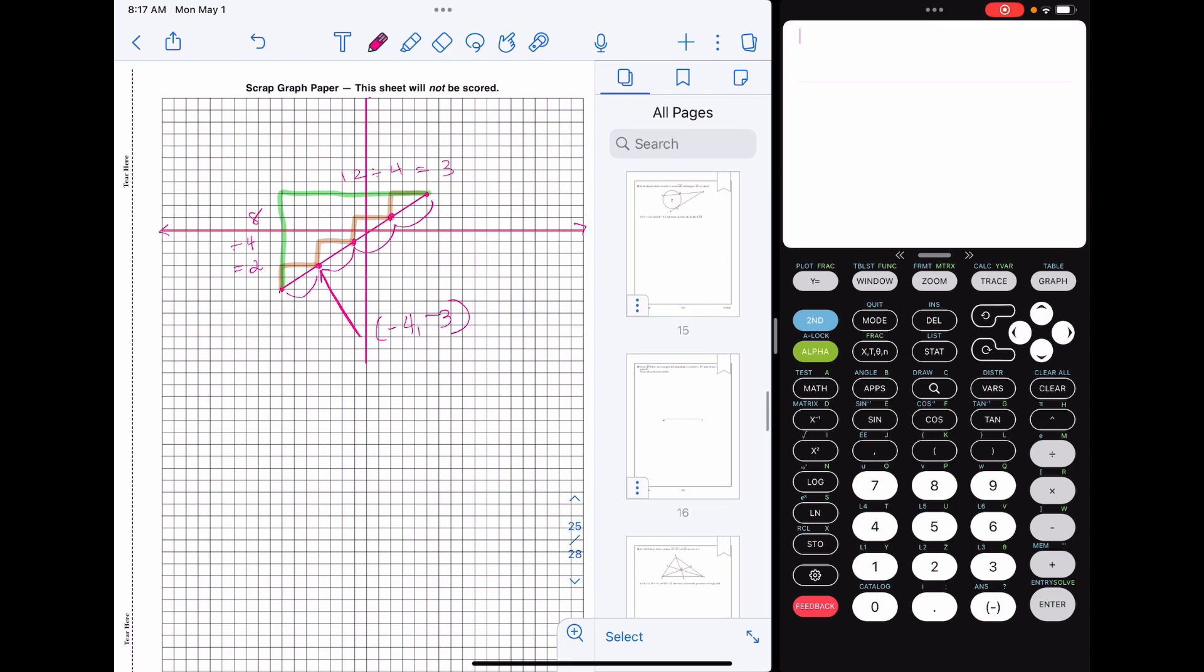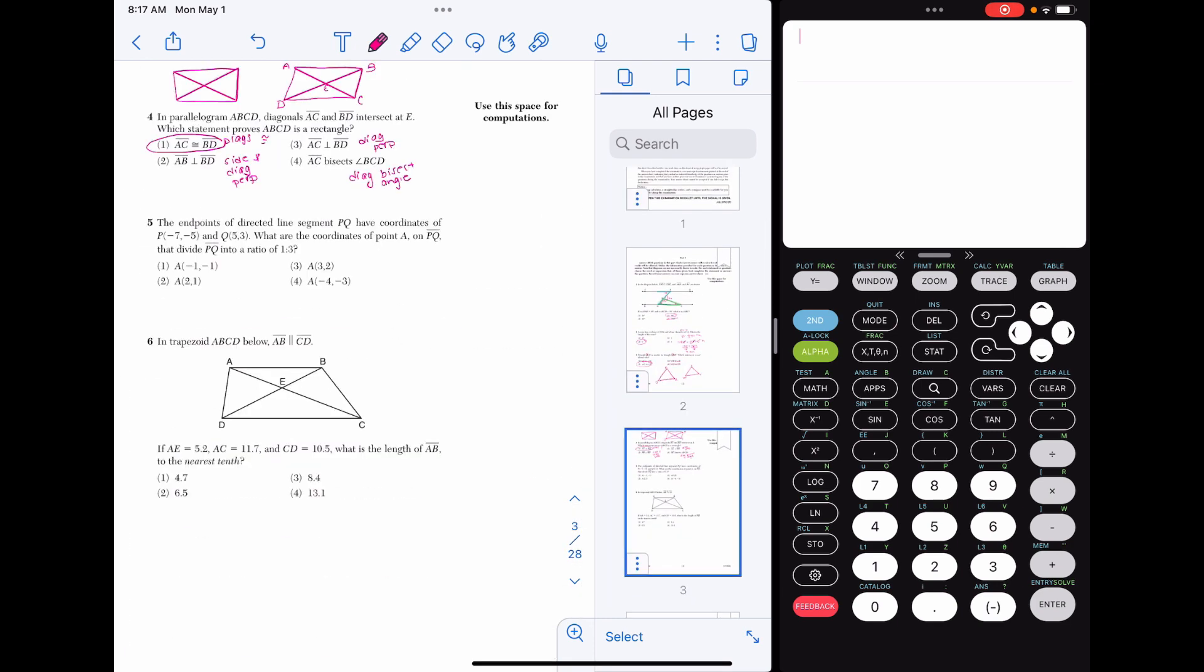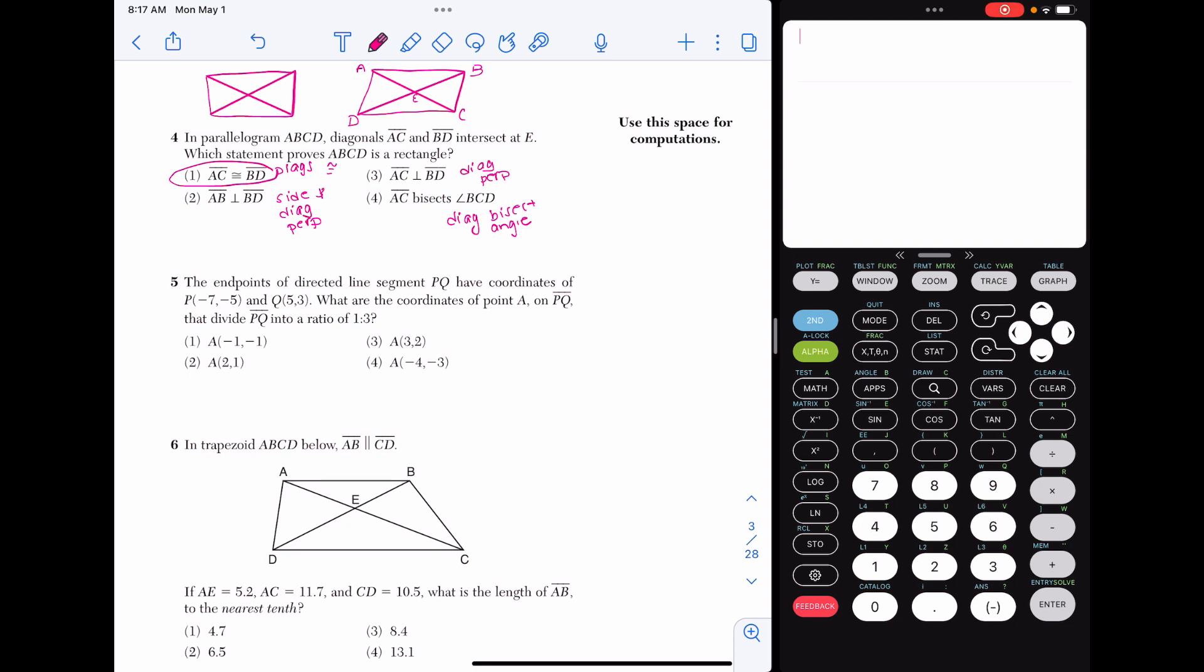Now we just have to find the coordinates of that point. It looks like it is negative four, negative three. So let's go back to the question. On your Regents, you can rip out the graph paper so that it's right next to you when you're working on the problem. I'm looking for negative four, negative three, so choice four.